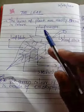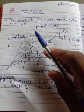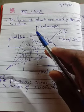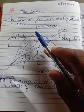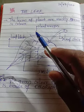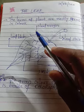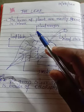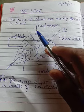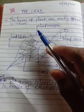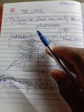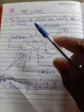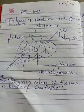The leaves of the plant are mostly green color. I think you have seen many plants whose leaves are green color. Most commonly, the leaf color is green color.